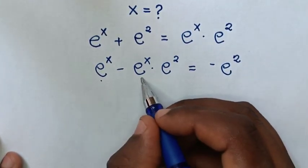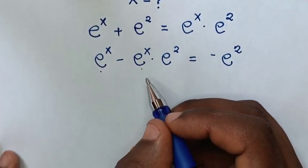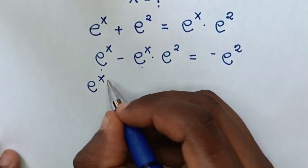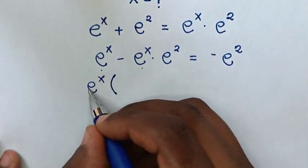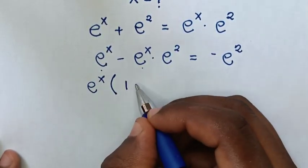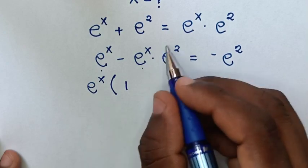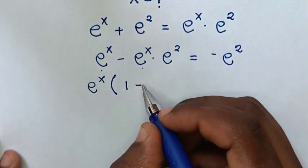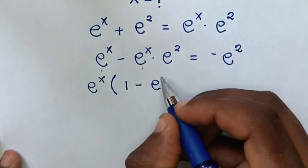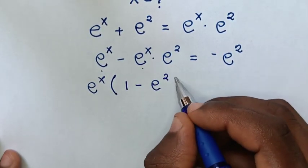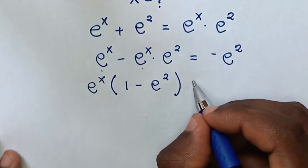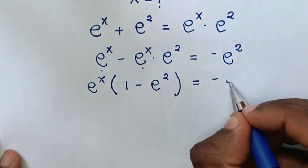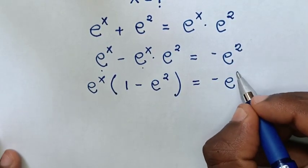E power of x is common, so we factor e power of x out of the bracket. Then 1 minus e power of 2, in bracket, is equal to negative e power of 2.